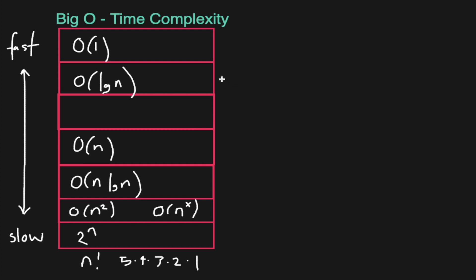Around this area on the chart you've also got things like O(√n) — the square root of n. If you had 9 numbers but you're doing something every third number, you have square root complexity. You could also have cubic roots and similar variations. Similar to how we got O(n²) and beyond, you could have the inverse — where the time complexity gets faster and faster — or worse and worse, depending on which way you're looking at things.